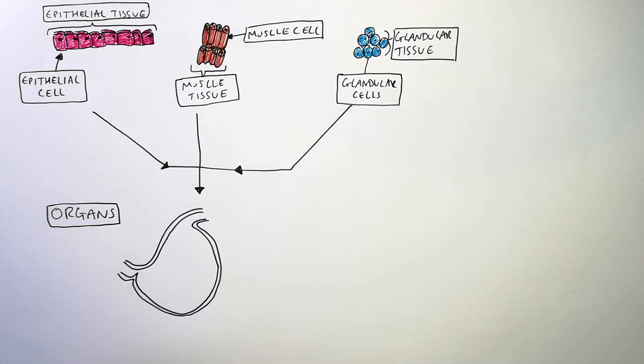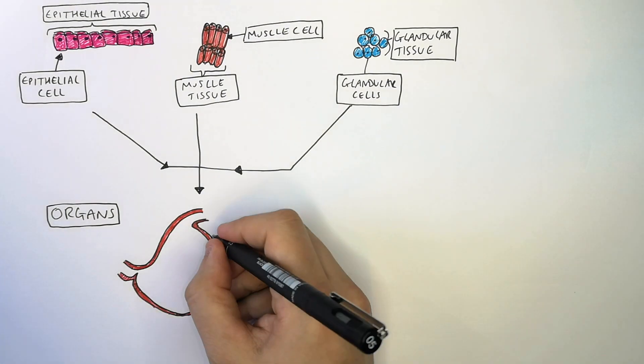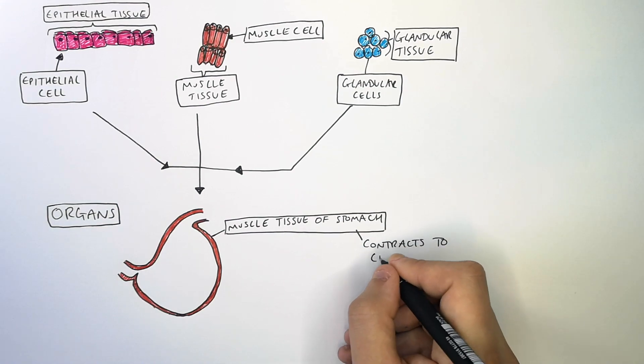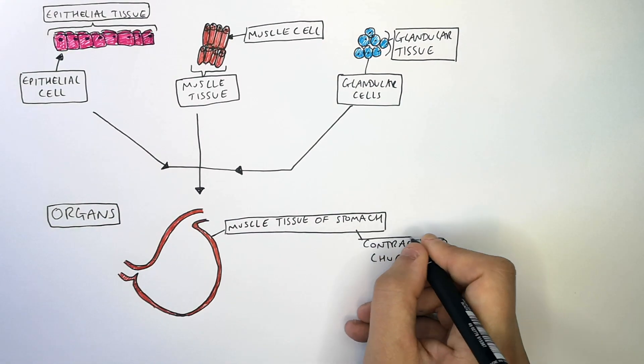What I've drawn here is muscle tissue. This is the muscle tissue that forms the wall of the stomach. The muscle tissue of the stomach contracts and relaxes continuously so that it churns the food to digest it.